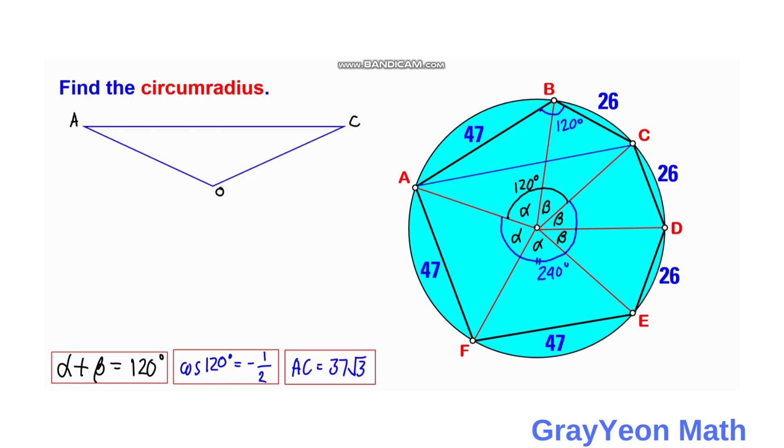We have AC equals 37 square root of 3, and this angle at O is 120 degrees. We label AO as the radius R. We can draw a line vertically from O upward to form a perpendicular. If this is 90 degrees, then we divide this angle by 2, so this becomes 60 and this becomes 30 degrees.